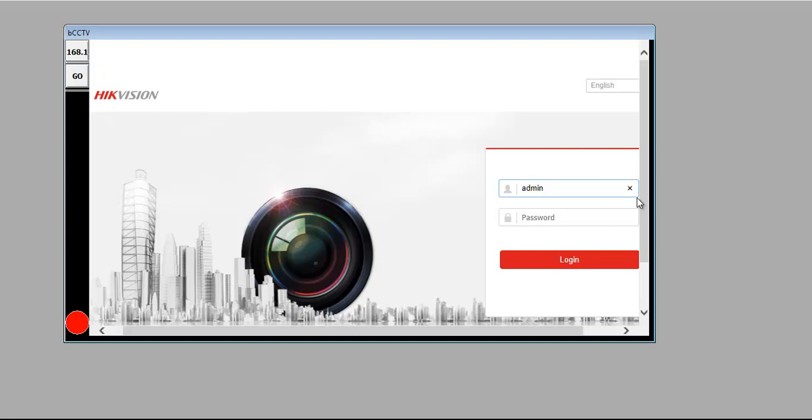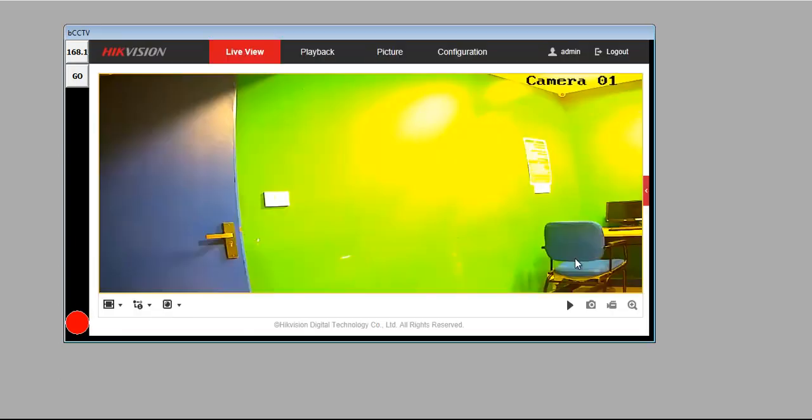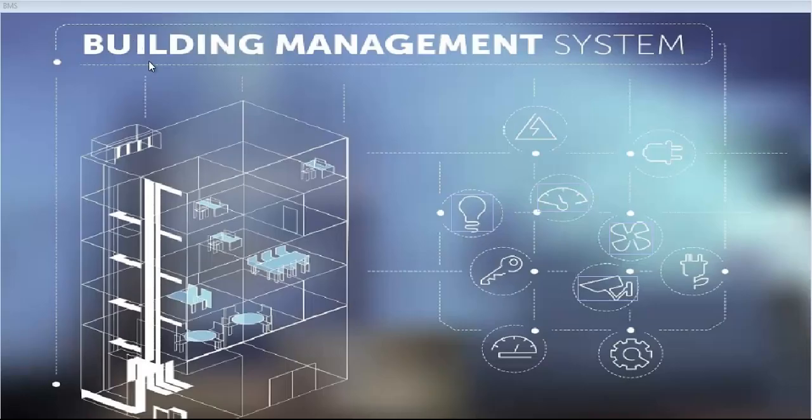Each camera has an individual ID for security purpose. It's asking username and password. These three HVAC, lighting control, and security system processes can be controlled and monitored by one single software called SCADA. Thanks for watching the video by IPCS automation.